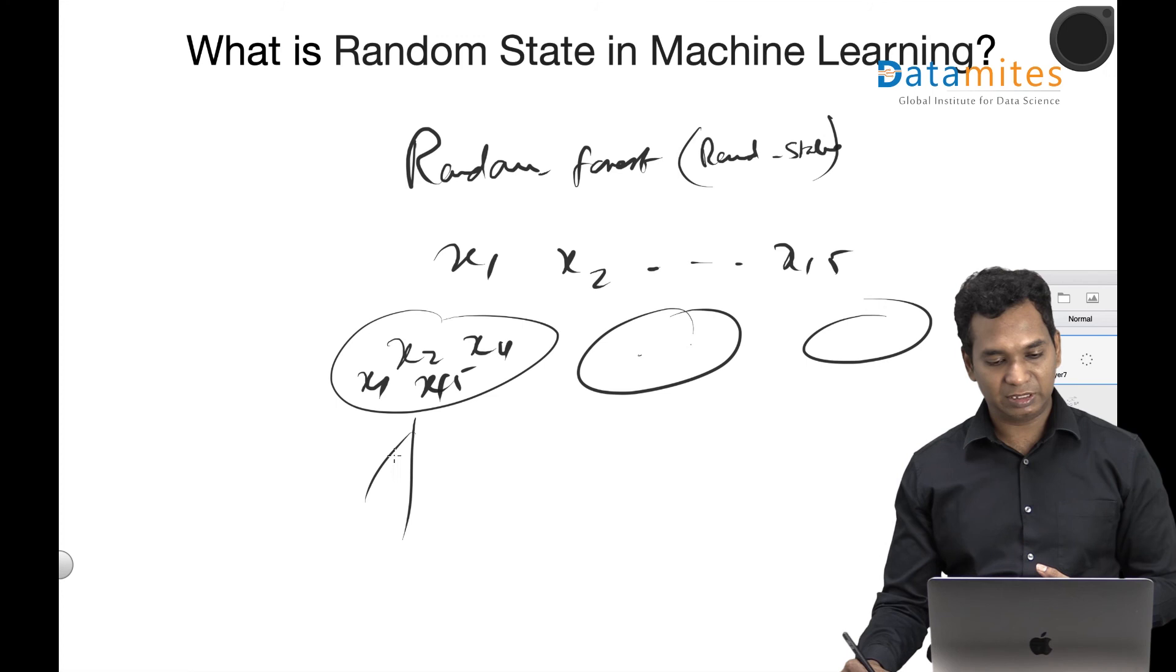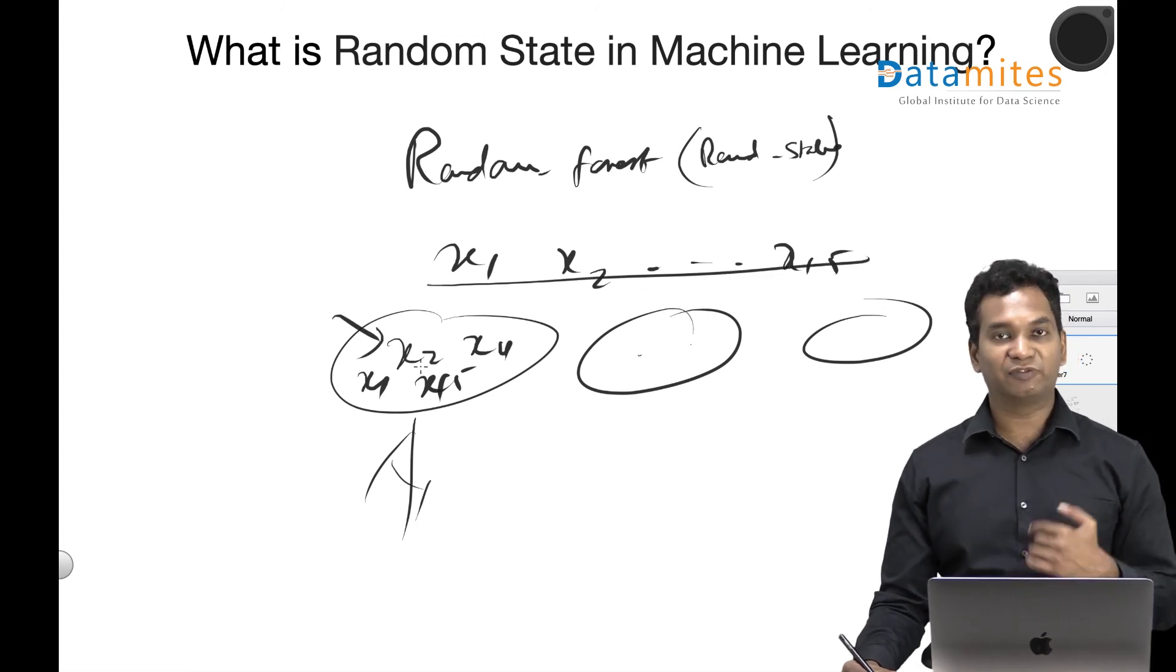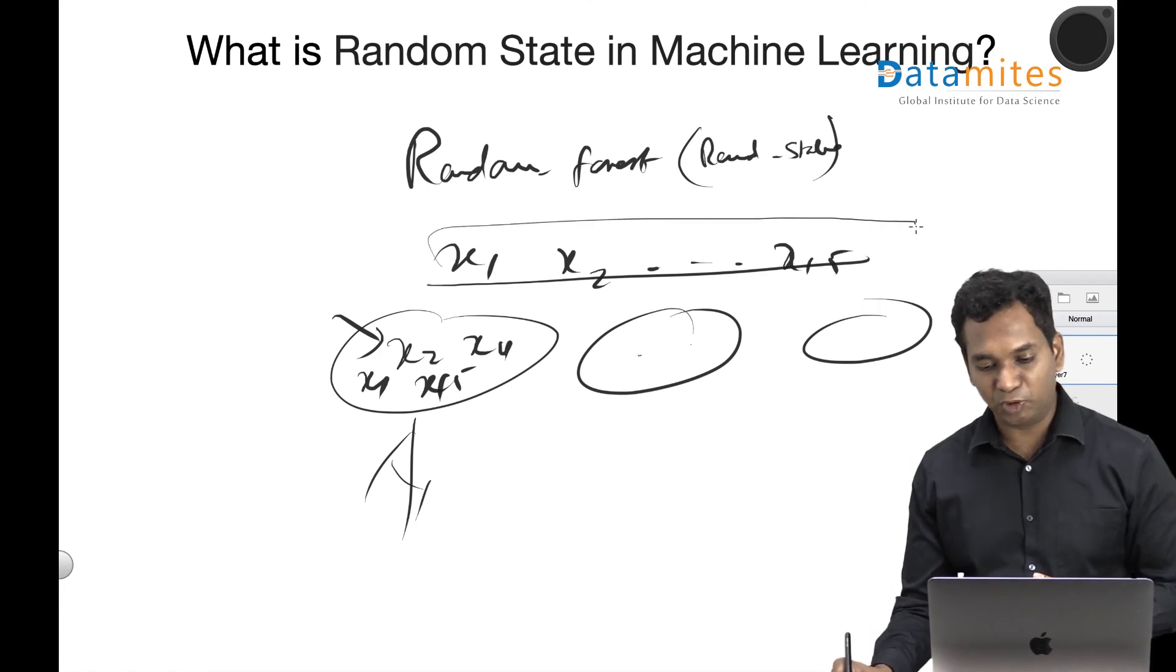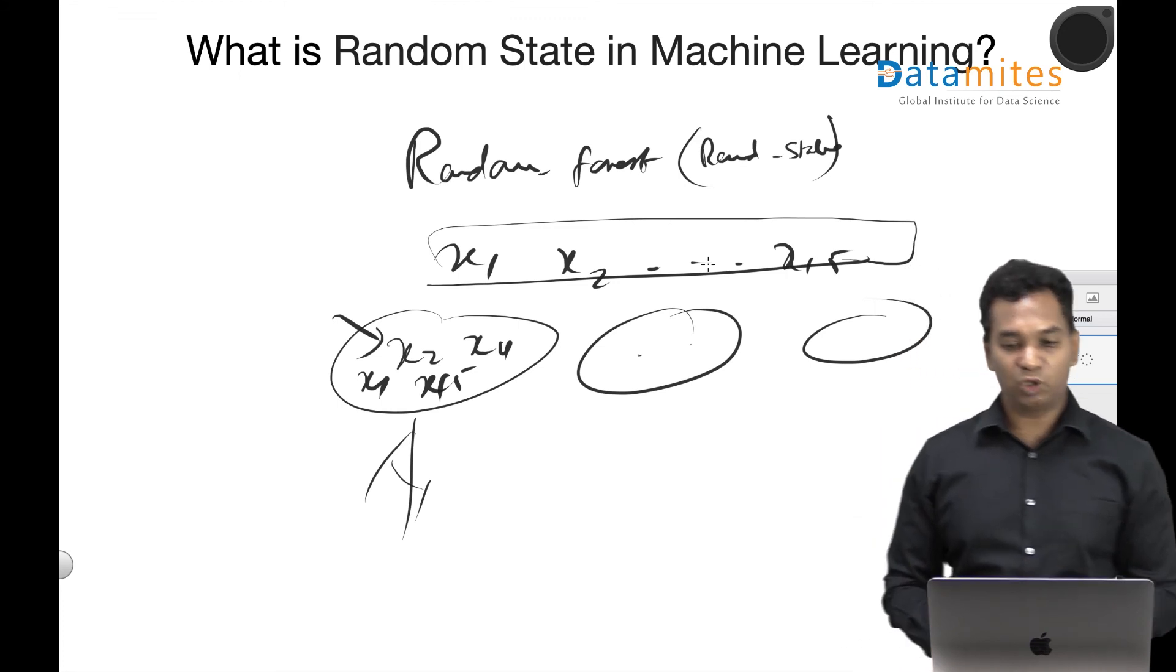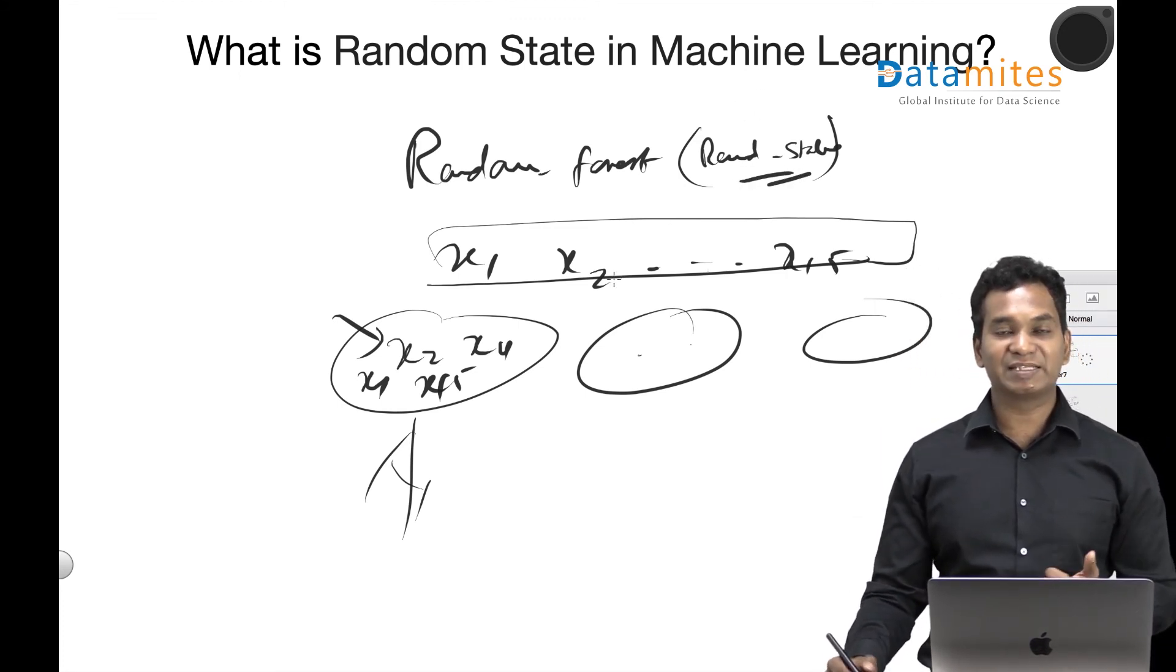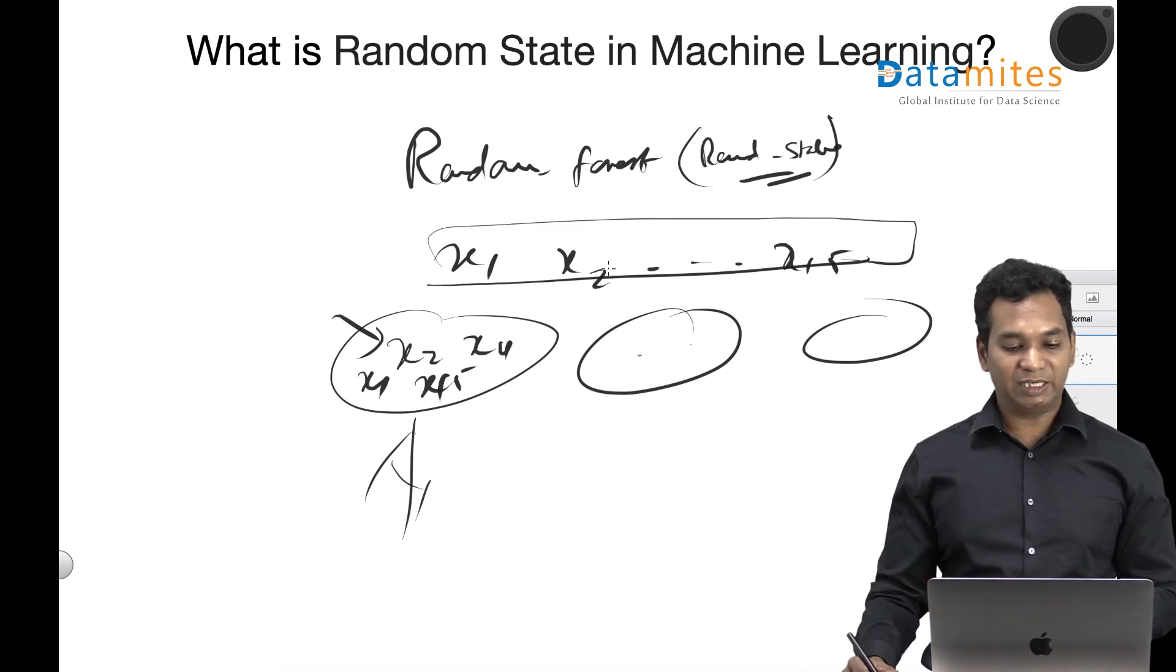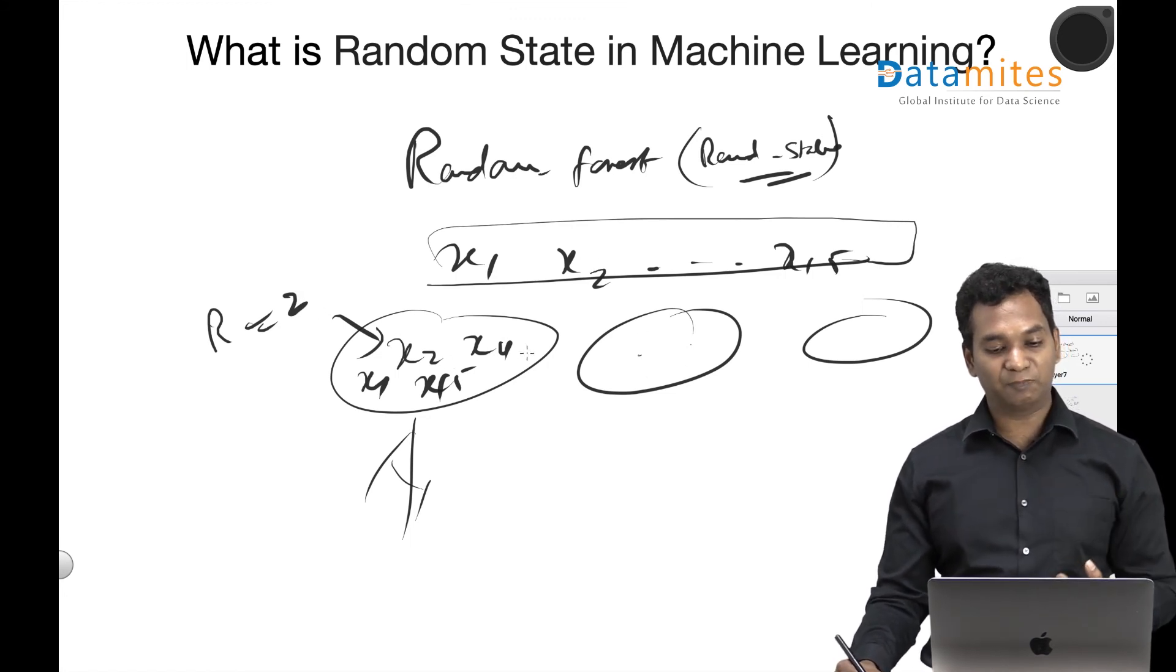These are called estimators. So the picking of these four or five features from the pool of features—the entire features—is random. That's why it's called Random Forest algorithm. In the case of Random Forest algorithm, the random state actually defines which features are picked.